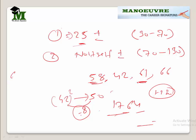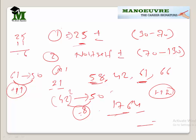What about 61? Again I compare by 50 — it is 11 more. 11 squared is 121. I always take 2 digits, so 21 remains and 1 is the carry. Since it is 11 more, I will add 11 to 25: 25 plus 11 gives me 36, plus 1 carry gives 37. So 3721 is your answer for 61 squared.